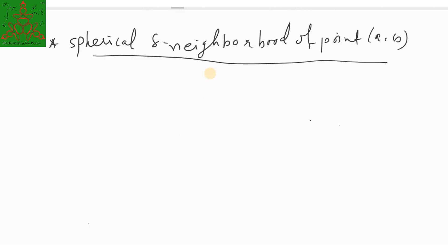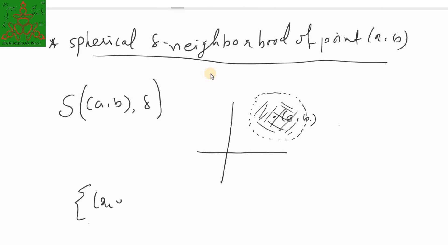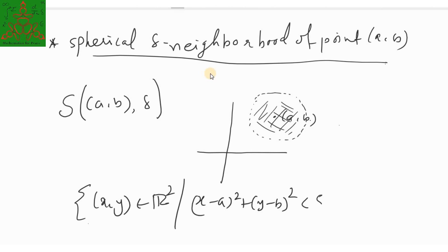The next definition is the spherical neighborhood of a point (A, B), denoted S(AB, delta). Whereas the rectangular neighborhood considers a square surrounding the point, the spherical neighborhood considers a disk surrounding the point — all points lying inside this disk are the spherical neighborhood. Mathematically, it is the set of all (x, y) in R² such that (x minus A)² plus (y minus B)² is less than delta².